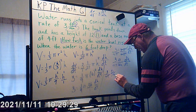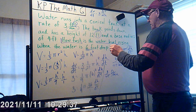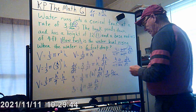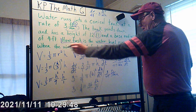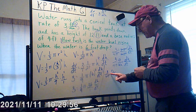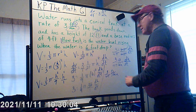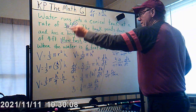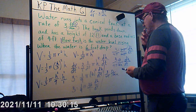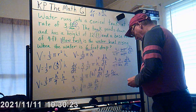The water level is rising at a rate of 3/(4π) feet per minute at the moment the water is six feet deep. This answer is positive because the water is rising. If the water level were going down, dV/dt would be negative and dh/dt would also be negative.